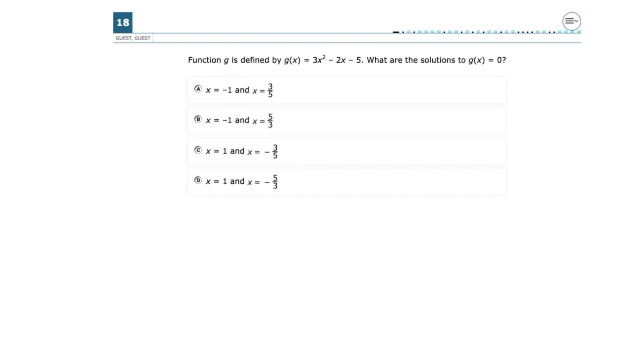This is number 18 from the 2024 Algebra 1 EOC. Function g is defined by g of x is equal to 3x squared minus 2x minus 5. What are the solutions to g of x is equal to 0?